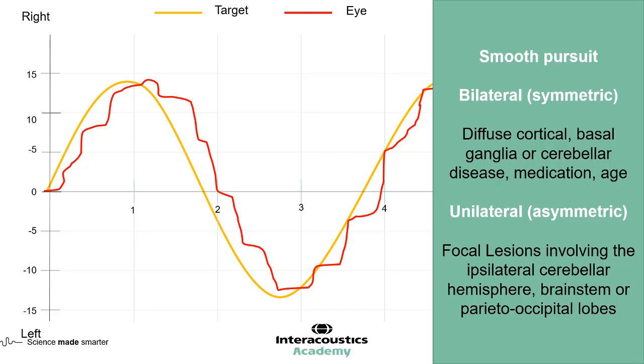This could be an ipsilateral cerebellar hemisphere, such as an ischemic event, or within the brainstem or the parietal or occipital lobes.